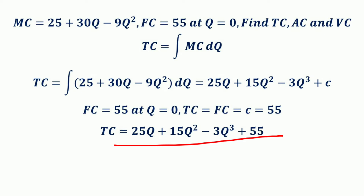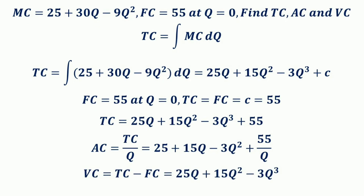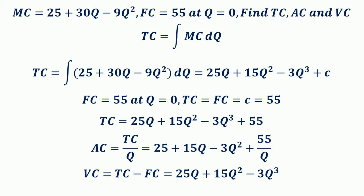Therefore, TC = 25Q + 15Q² − 3Q³ + 55. The average cost is total cost divided by output Q, so AC = 25 + 15Q − 3Q² + 55/Q. The variable cost equals total cost minus fixed cost. Since FC = 55, the variable cost is VC = 25Q + 15Q² − 3Q³.